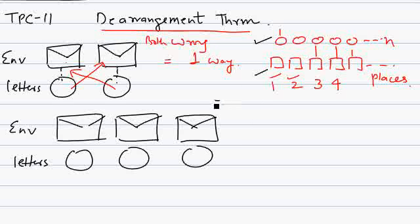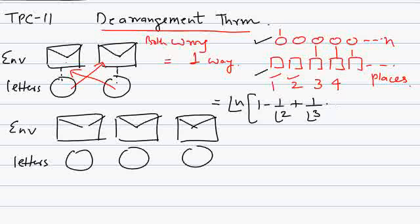Now the derangement theorem says: if we have to find the number of ways to place n objects in n places so that no object goes to its corresponding container — all objects go into wrong placeholders — then the formula is: n factorial times (1 minus 1 by 2 factorial), with an alternating plus-minus sign, increasing the denominator: 2 factorial, 3 factorial, 4 factorial, up to the last term which is 1 by n factorial.